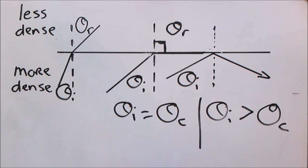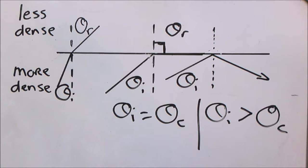The formal definition of the critical angle is: the angle of incidence that produces an angle of refraction of 90 degrees, where the refracted ray is parallel to the boundary between the two media.